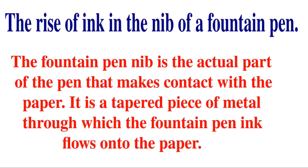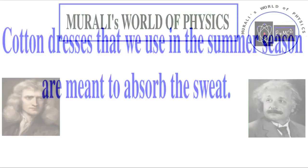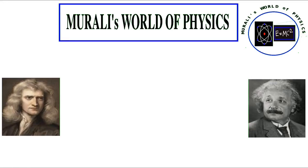The fountain pen nib is the actual part of a pen that makes contact with the paper while writing. It is a tapered piece of metal through which the fountain pen ink flows into the paper. During the summer season, we wear mainly cotton clothes. This is to absorb the sweat produced because of the heat.